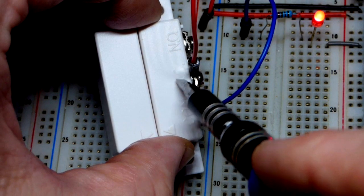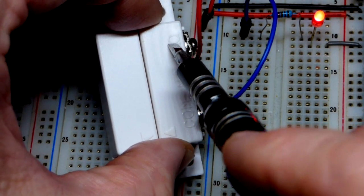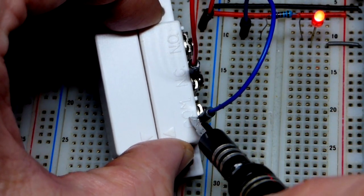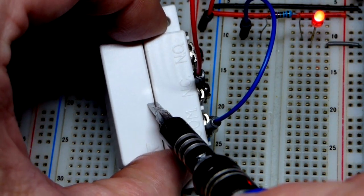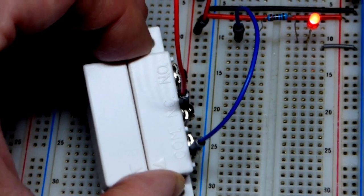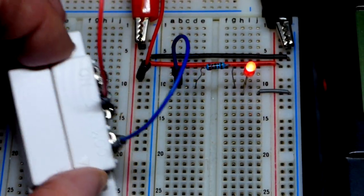Either that terminal there or that terminal makes a direct connection to COM. So the normally closed, that means when the magnet is close enough, right now we have a connection. You can see the LED is on.